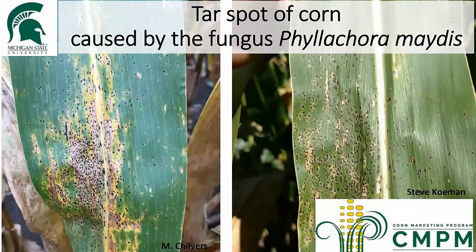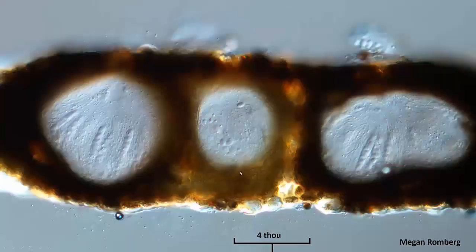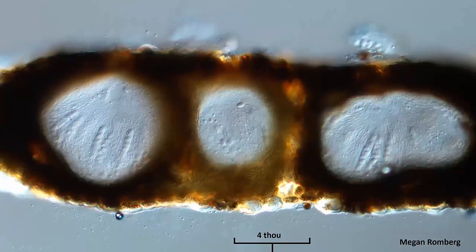I'll spend the rest of the time talking about tar spot — that's probably more of a concern this season. It's a pretty new disease for Michigan, only been here for about three or four years. As the name suggests, it looks like tar has been flecked onto the leaves. This is a close-up of a tar spot lesion — the top side of the leaf is at the top of the screen. Those tar spot structures are little fungal reproductive structures producing spores that get exuded onto the leaf surface and then get rain-splashed and wind-carried from plant to plant and field to field.